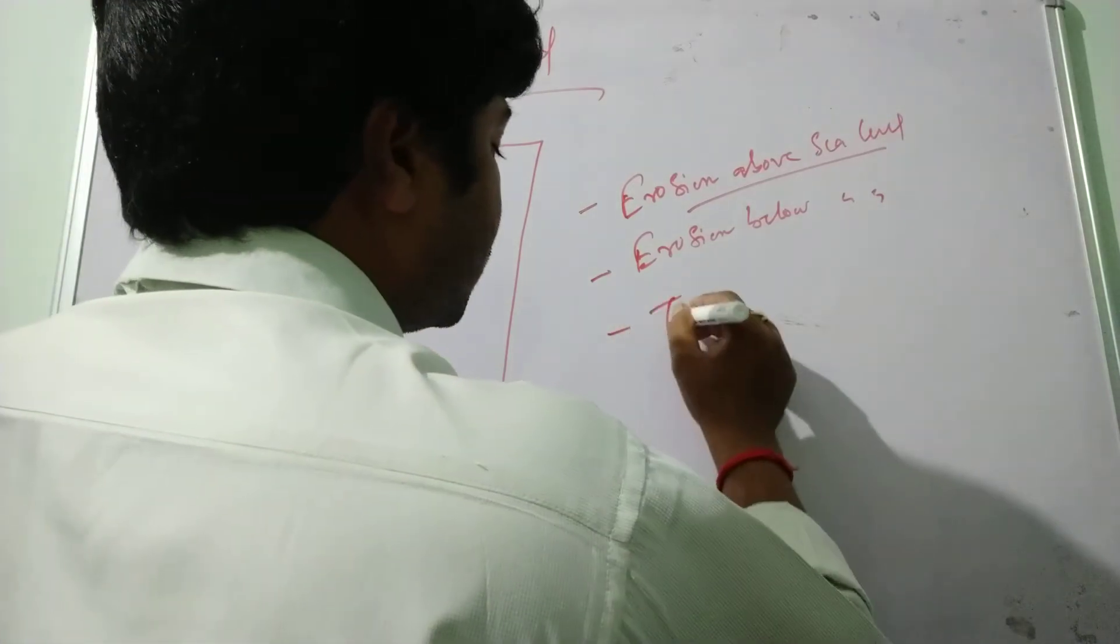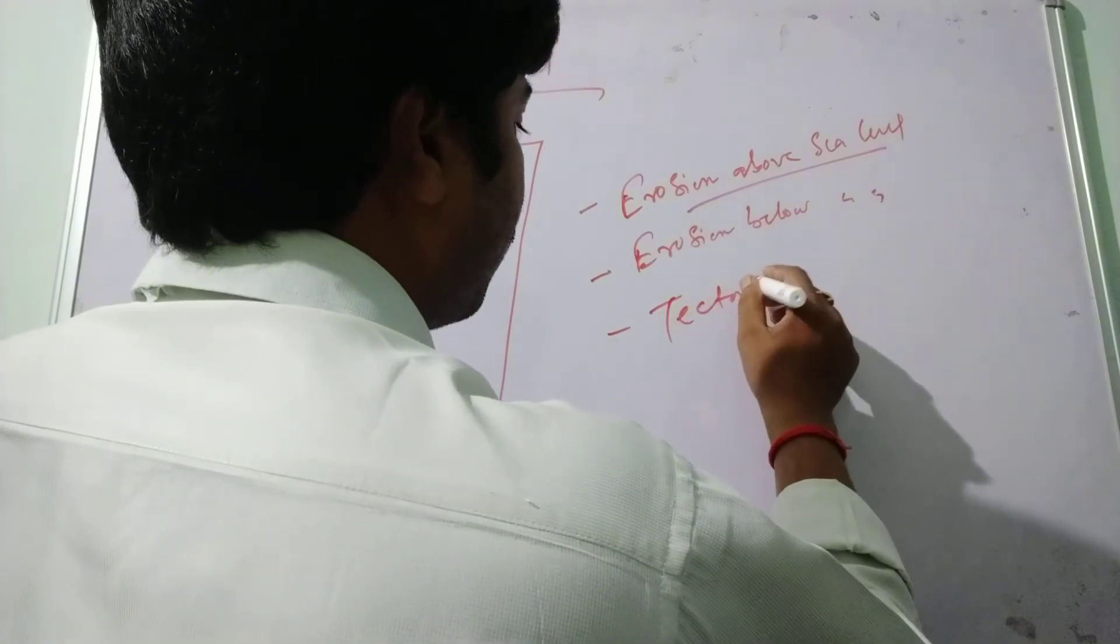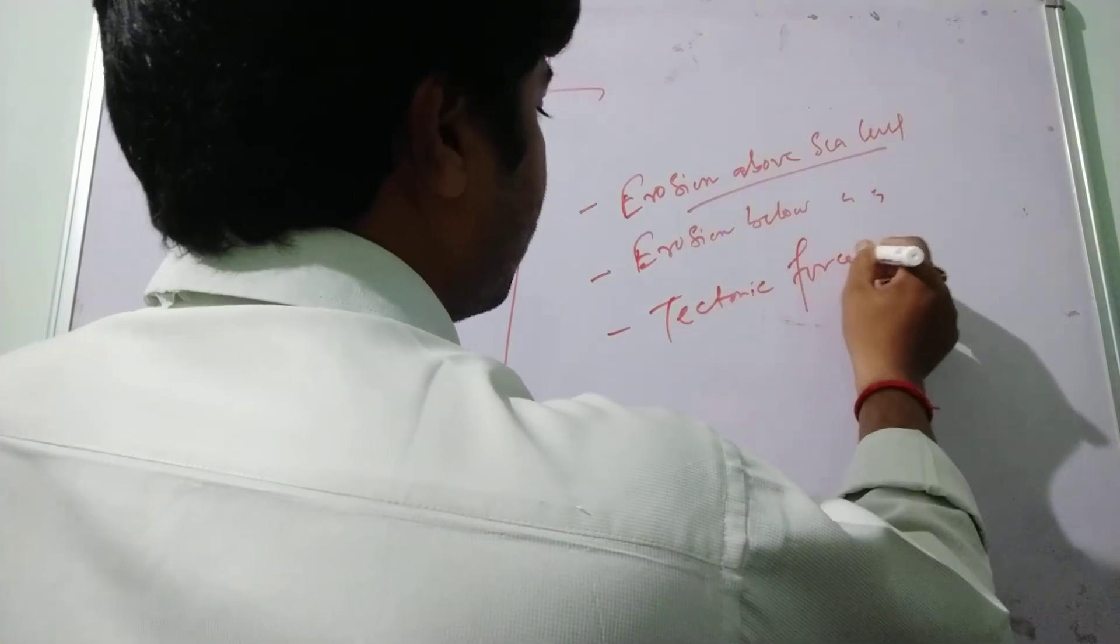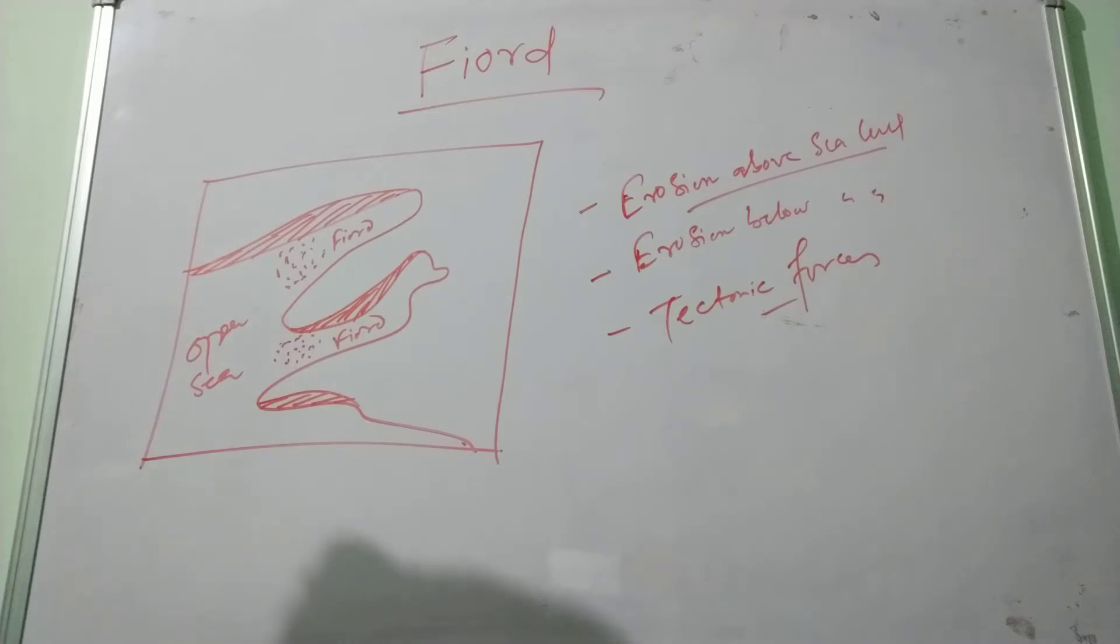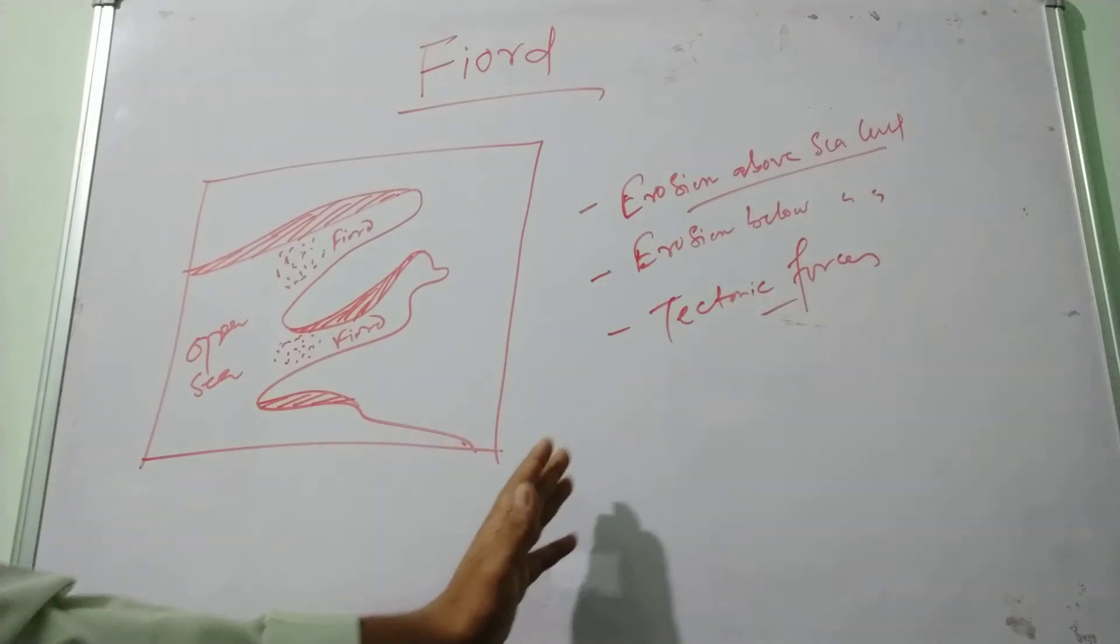Some geomorphologists stated that tectonic forces are another important factor. According to this view, fjords have been formed due to the submergence of grabens which are formed by faulting near the coast. So there are three different views provided by geomorphologists for the formation of fjords.